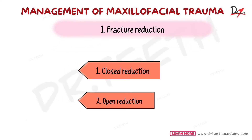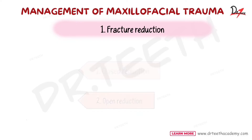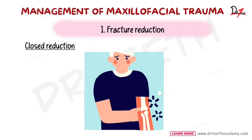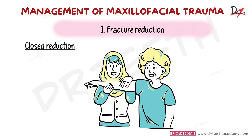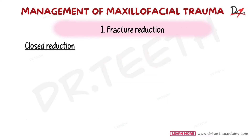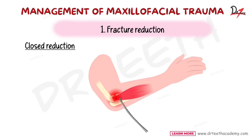Closed technique means that you do not need to do surgery. For example, if a patient's hand is broken, you either hold the hand from outside and apply force so it gets back to its normal position, or you can surgically open that area and bring the bones back together. When you do it without surgery, it is the closed technique; when you do it after surgery, it is the open technique.